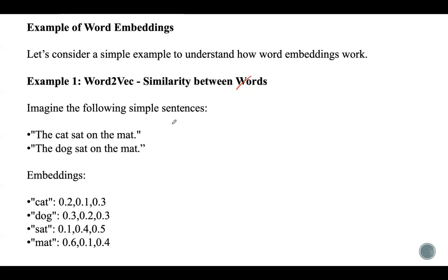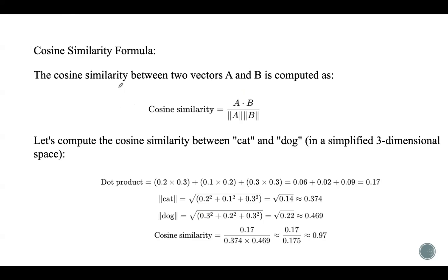Let us see an example for word embeddings using Word2Vec. Consider two simple sentences: 'the cat sat on the mat' and 'the dog sat on the mat.' Assume the model has learned vector embeddings for the words 'cat,' 'dog,' 'sat,' and 'mat.' When we compute the cosine similarity between the vectors for 'cat' and 'dog,' we get a high similarity score, indicating that the model understands these words are related, since both are animals.